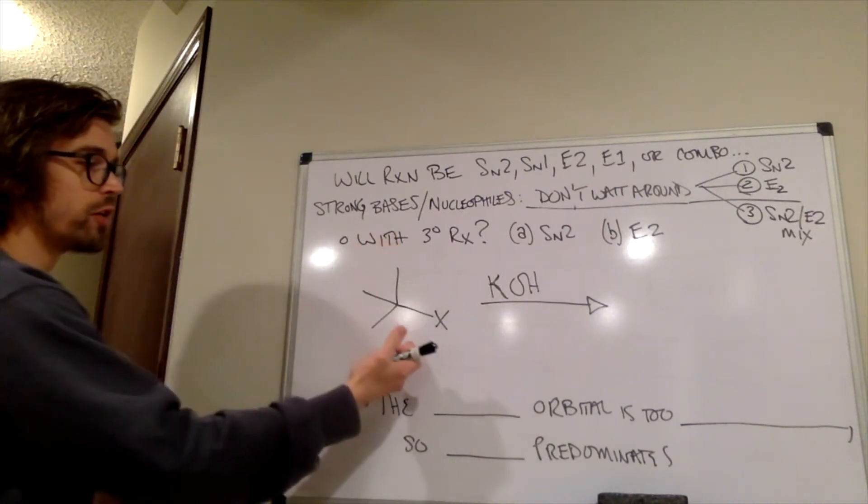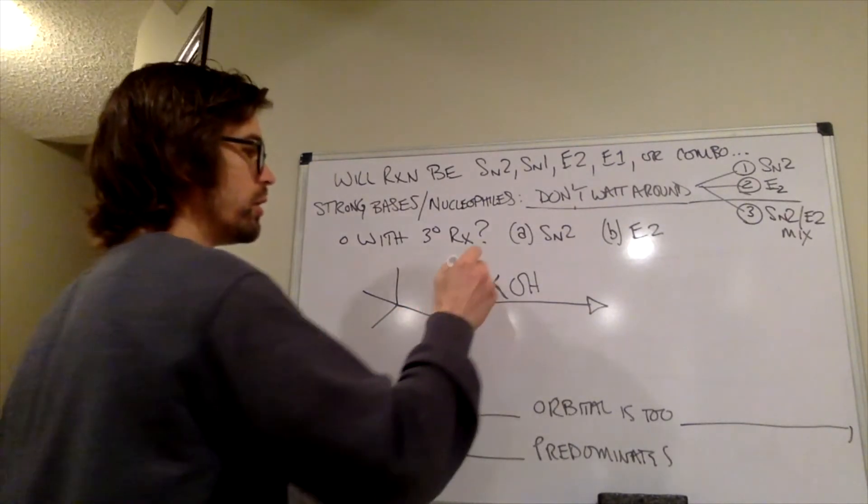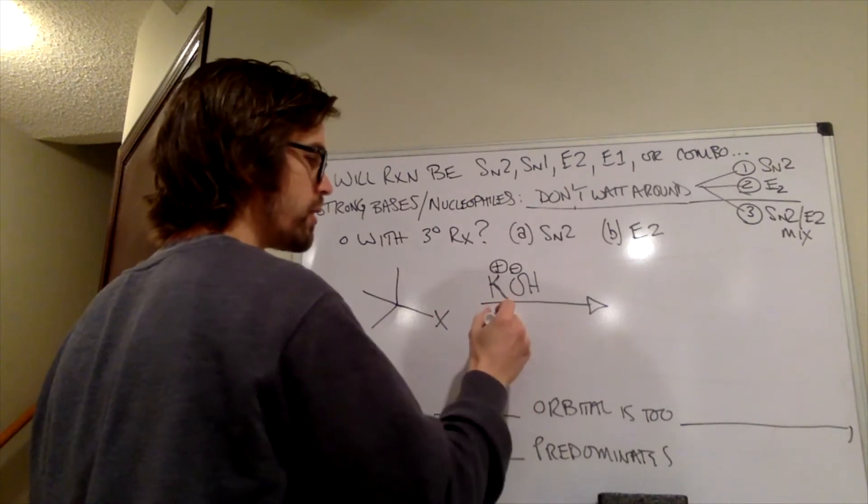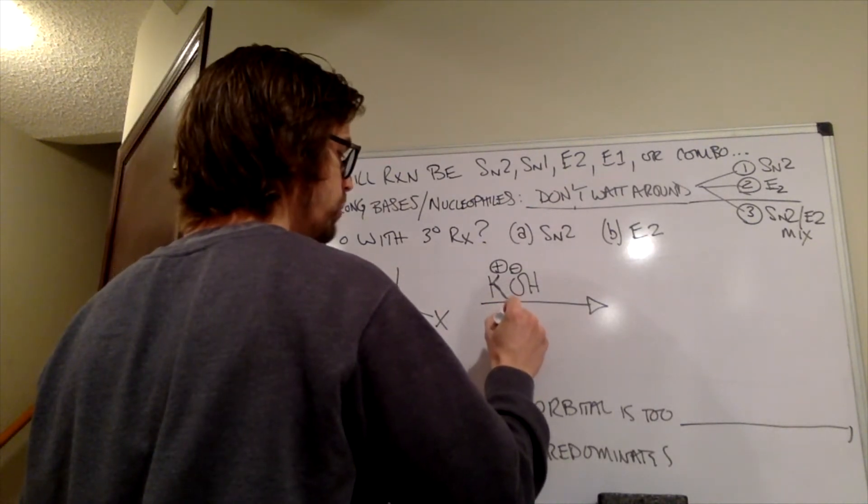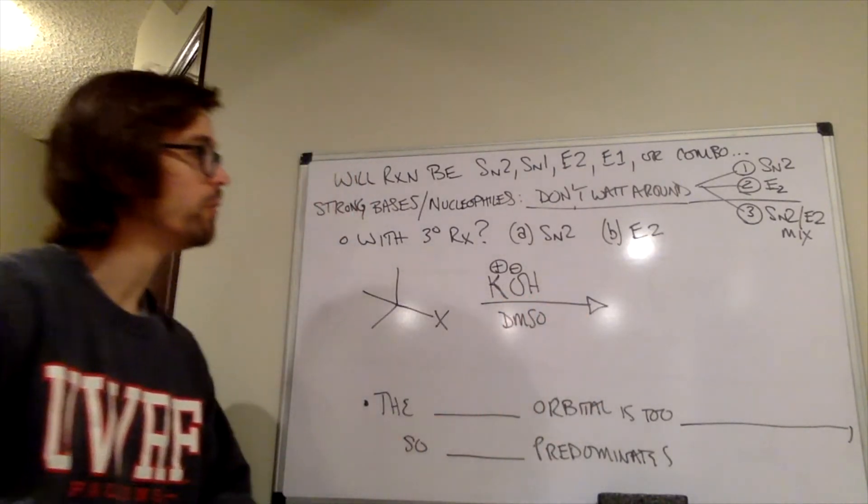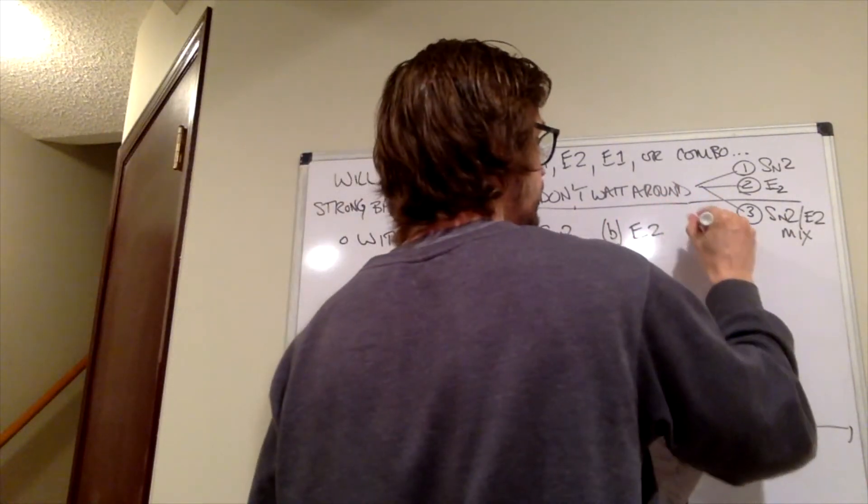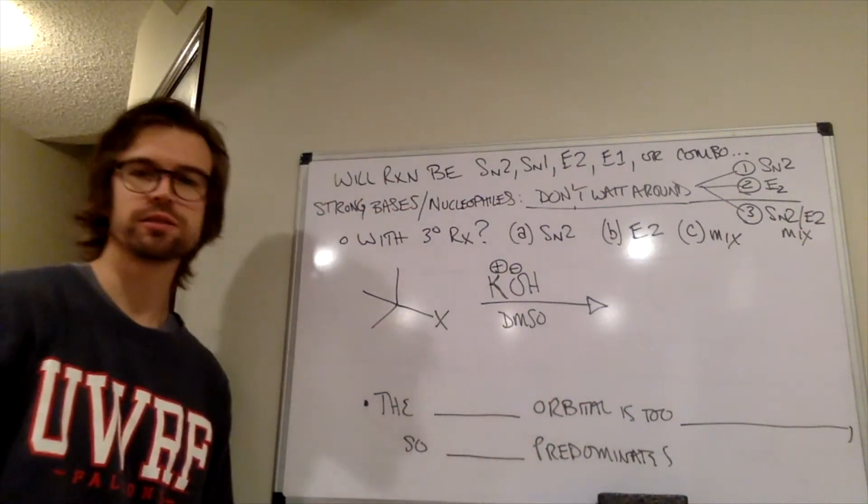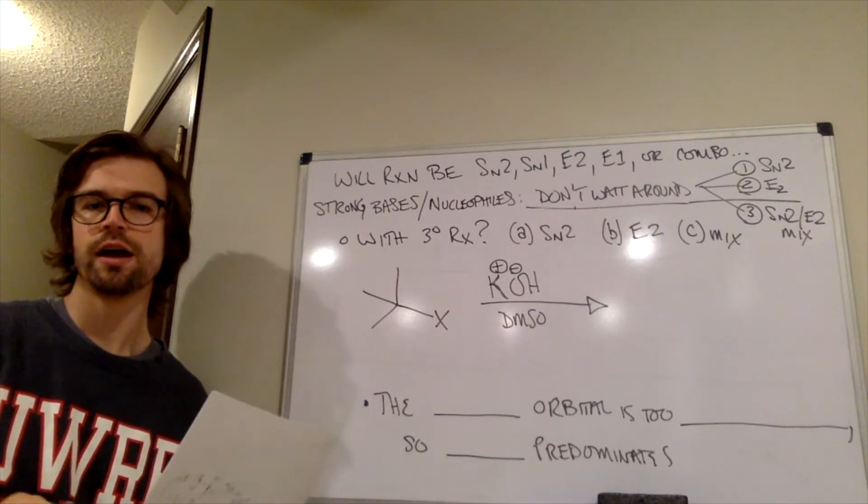What about this primary alkyl, sorry, this tertiary alkyl halide that we have with this strong base, strong nucleophile, we'll even throw in a polar aprotic solvent to make the reaction happen faster, like DMSO. So, is this going to be SN2, E2, or C, a mixture? So go ahead and pause the video, think to yourself, maybe jot something down about your reasoning, and then come back.